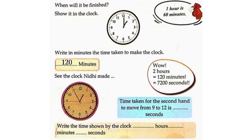Two hours is equal to 7200 seconds. See the clock Niti made. Time taken for the second hand to move from 9 to 12 is 15 seconds. Write the time shown by the clock: 12 hours 55 minutes 45 seconds.